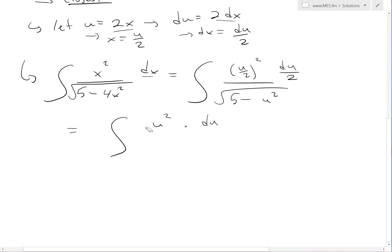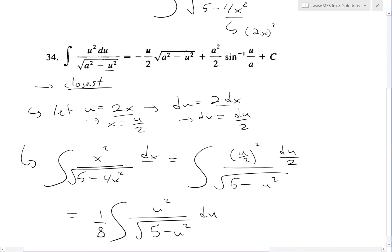Or we could move it over here, so 1 over 8. So that becomes like that. We'll make this look nicer, so du here and then square root 5 minus u squared. And now it looks pretty much exactly like what we have over here.